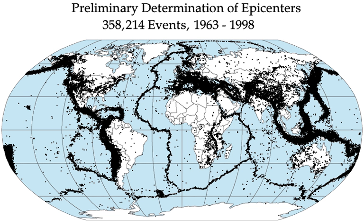This can be understood by considering the direction of the greatest principal stress—the direction of the force on the rock mass during faulting. In the case of normal faults, the rock mass is pushed down in a vertical direction, so the pushing force equals the weight of the rock mass itself. In the case of thrusting, the rock mass escapes in the direction of the least principal stress, namely upward, thus the overburden equals the least principal stress. Strike-slip faulting is intermediate between the other two types.